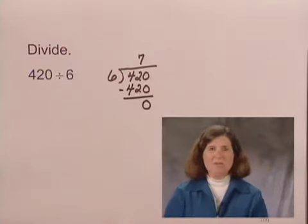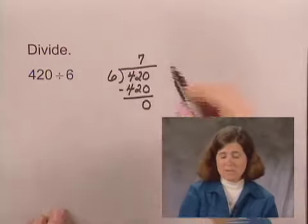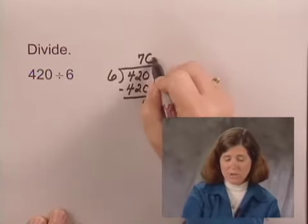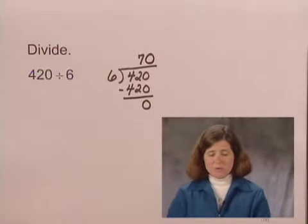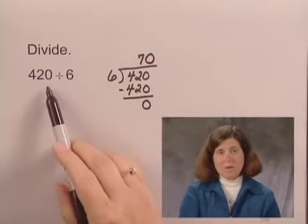Now we can't just leave the number 7 because that was 7 tens, so we have to write a 0 in the quotient as a placeholder. So the answer to 420 divided by 6 is 70.